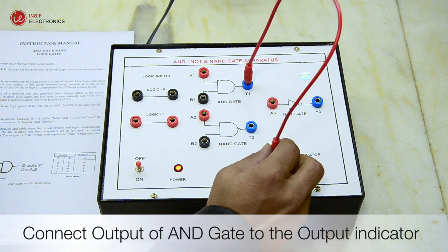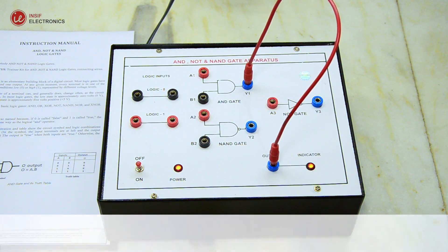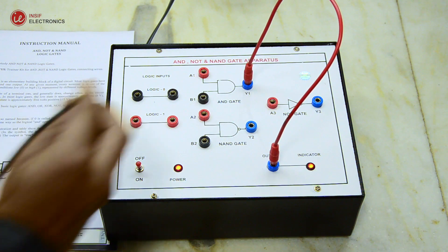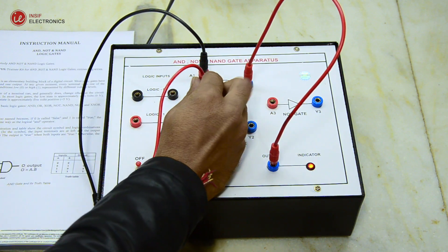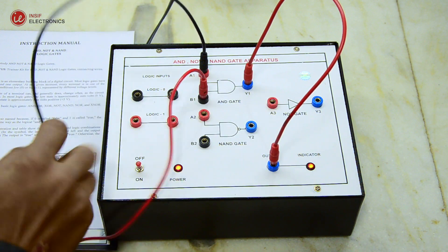Let's start with AND gate. The AND gate is so named because if 0 is called false and 1 is called true, then the gate acts in the same way as the logical AND operator.